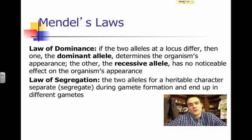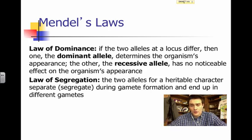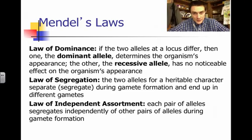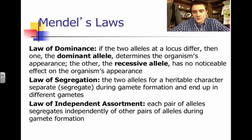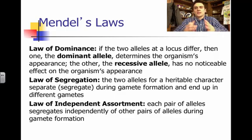The second law credited to Mendel is the law of segregation, or separation — when two alleles for a heritable character separate from one another during gamete formation and end up in different gametes. Two alleles for one inheritable trait are not going to the same gamete; they're broken apart. The third law, independent assortment, states that each pair of alleles separates independently from other pairs during gamete formation — no teaming up, complete independent assortment. But there's a disclaimer — we'll see an exception to this shortly.